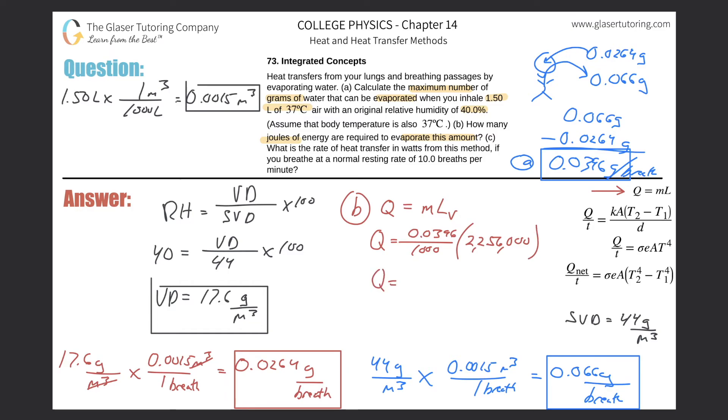And voila, all we now need to do is calculate. So take that, divide it by 1,000, then multiply that by 2,256,000. And here we get about 89.3. So here is about 89.3 joules. So that is the energy that's required in joules to evaporate.